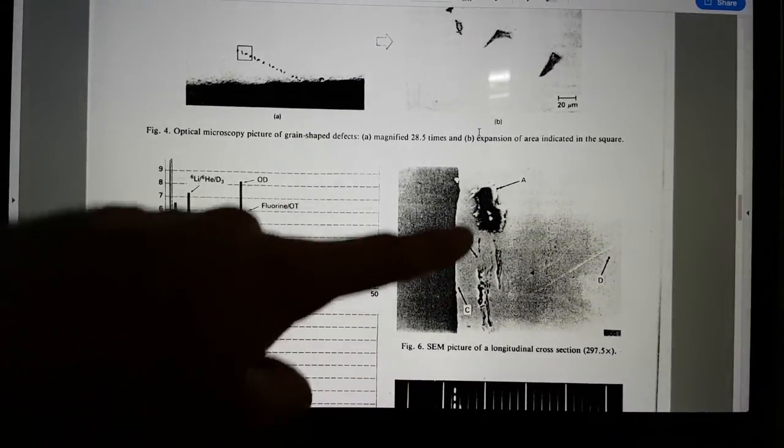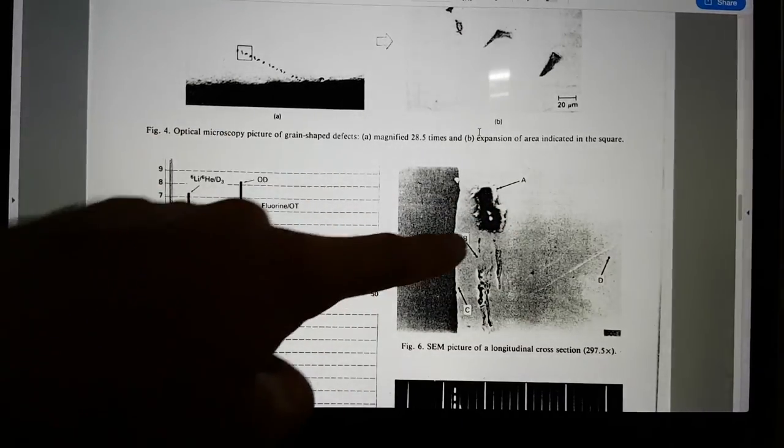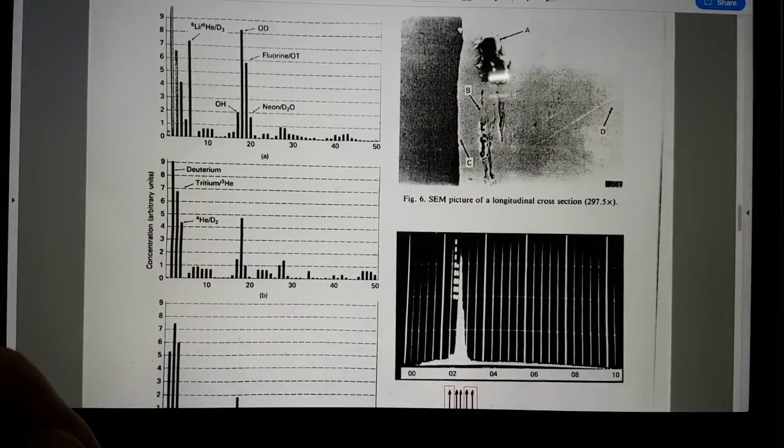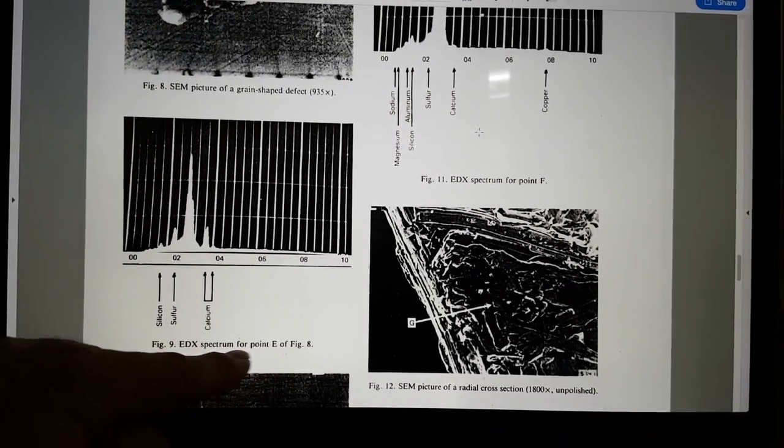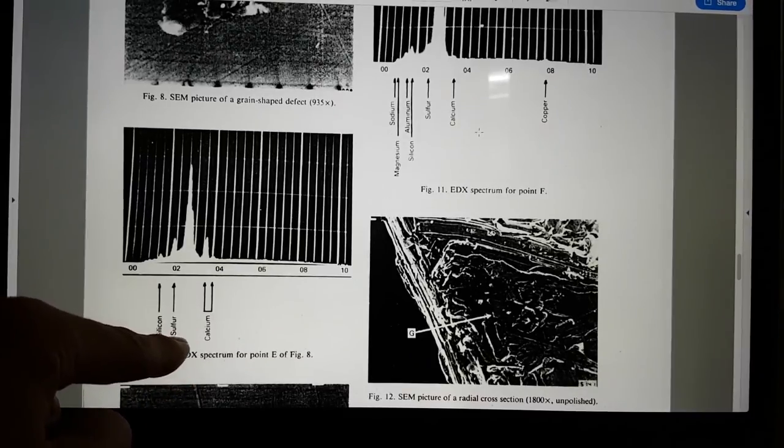Then he goes on and so it says figure eight is an SEM picture of a grain-shaped defect in which the materials are left somewhat unburned. Figure nine shows an EDX spectrum at some point E in figure eight, the energy spectrum is different from the standard one. It is remarkable that elements such as silicon, sulfur and calcium exist among the materials remaining inside the grain-shaped defects. Now let's have a look at some of these grain-shaped defects. So he's picked out one here and you've got A, B, C, D. So he's only referring, he's just really looking at the palladium in those cases. But let's have a look at some of these grain-shaped defects. E, we have a sample here and you've got silicon, sulfur, calcium.